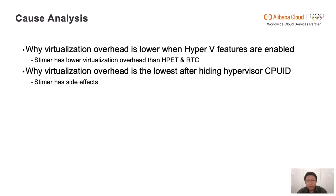With the above information, we can know why the virtualization overhead is lower when the Hyper-V features are turned on — this is because the virtualization overhead of S-Timer is much lower than the virtualization overhead of HPET and RTC. On the other hand, why is the virtualization overhead of hiding the CPUID feature the lowest? This is because S-Timer also has some side effects, which will increase the virtualization overhead in other places.